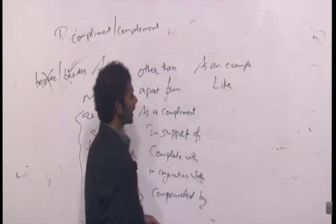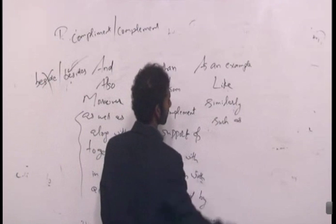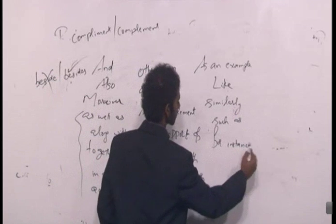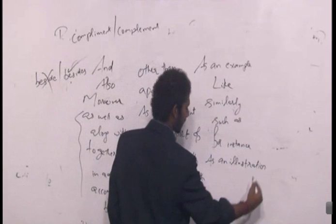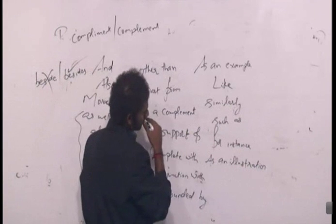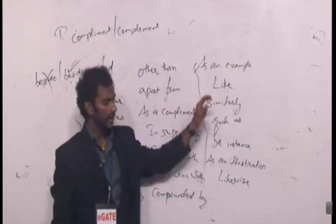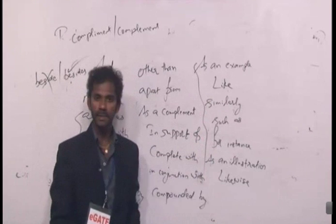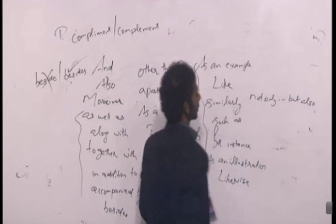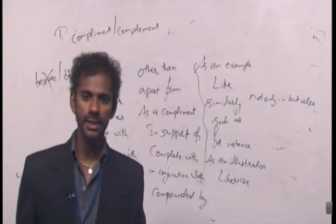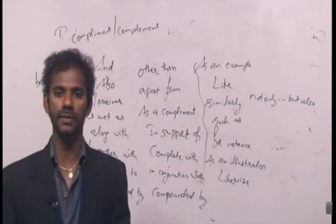More support indicators: like, similarly, such as, for instance, as an illustration, likewise — all mean the same. Not only... but also. These words connect supporting ideas — either two positive ideas or two negative ideas. Whenever you come across these words, the two ideas getting connected will be either both positive or both negative.